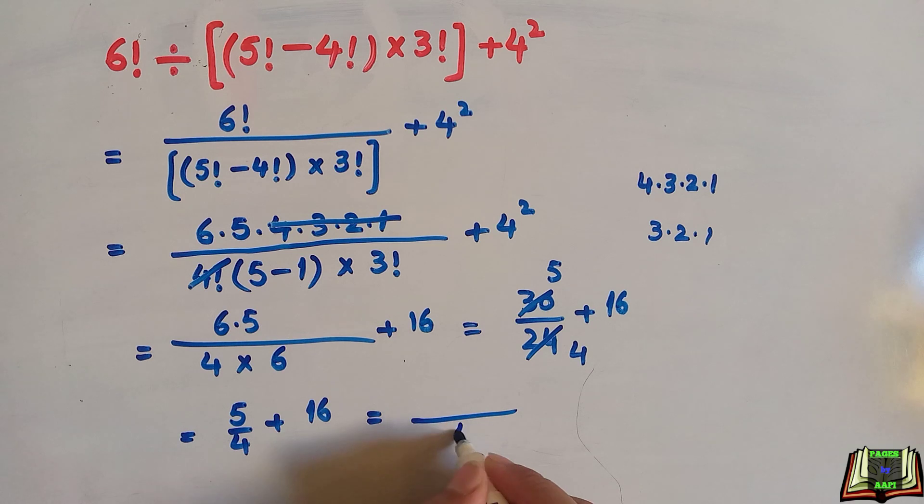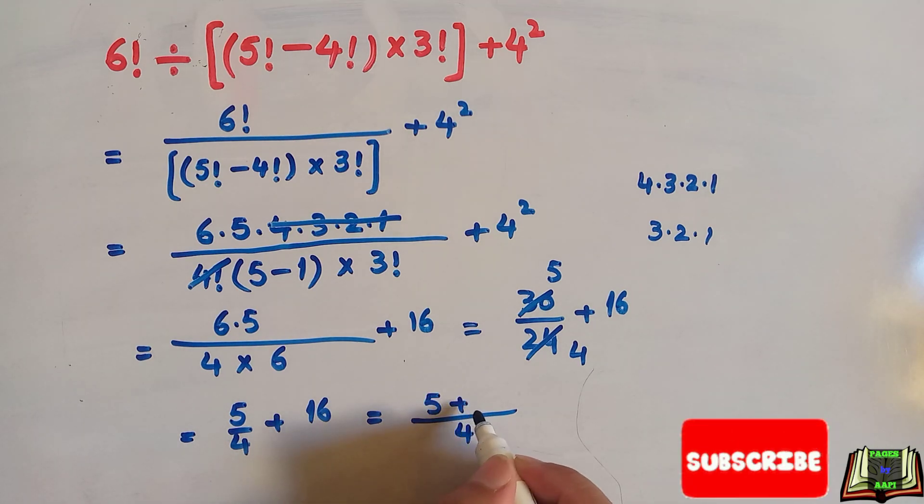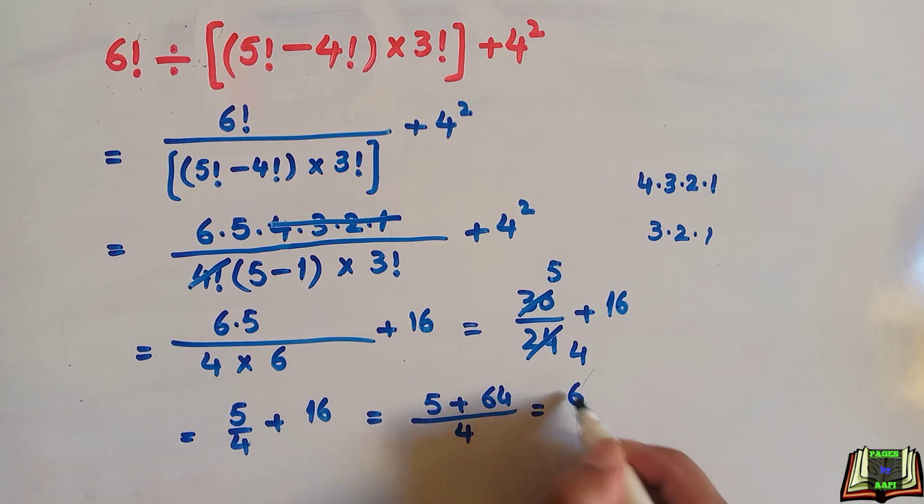Now taking LCM, the LCM is 4. We have 5 over 4 plus 16. Converting to common denominator, 5 over 4 plus 64 over 4 equals 69 over 4. After dividing, we have the answer 17.25.